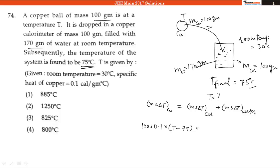This is equal to the mass of calorimeter, which is 100 grams. The calorimeter is made up of copper, which has a specific heat of 0.1 again. And delta T for copper is the difference between 30 and 75, plus m·s·ΔT of water.